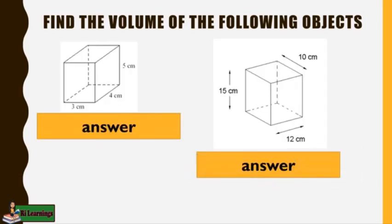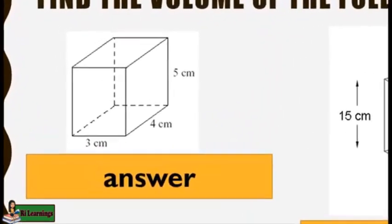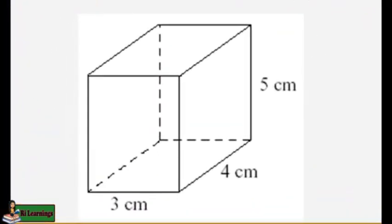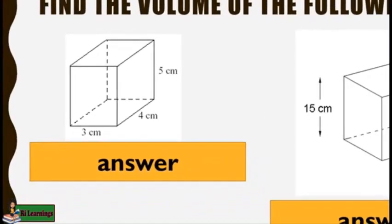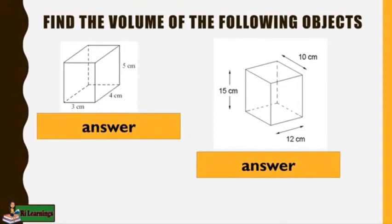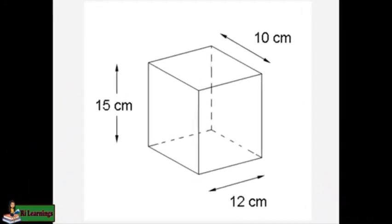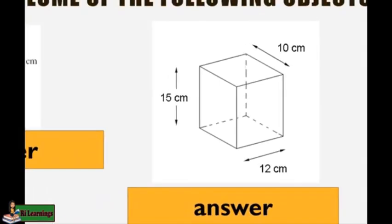Next problem, find the volume of the following objects. For number three, the height is 5 centimeters, the length is 4 centimeters, and the width is 3 centimeters. What is the volume of the object? For our last object, the height is 15 centimeters, the width is 10 centimeters, and the length is 12 centimeters. What is the volume?